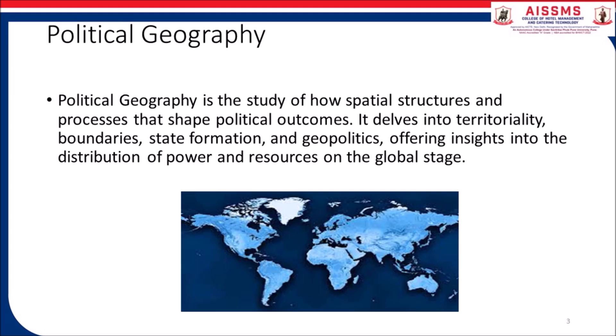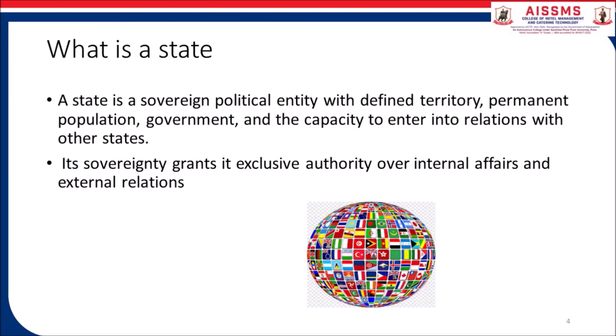Independent states are the primary building blocks of the world political map. A state — which we also call a nation or a country — is a territory with defined boundaries, organized into a political unit, and ruled by an established government, whether democratic or a monarchy. The government has control over its internal and foreign affairs. When a state has total control over its internal and foreign affairs, it is called a sovereign state. A location claimed by a sovereign state is called a territory.